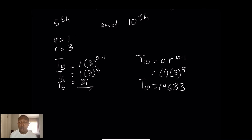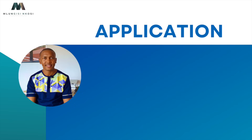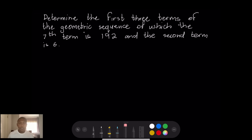So essentially that is how it works. What I want us to do is take a couple of examples we can apply this on. Let's look at this example: determine the first three terms of the geometric sequence of which the seventh term is 192 and the second term is 6.